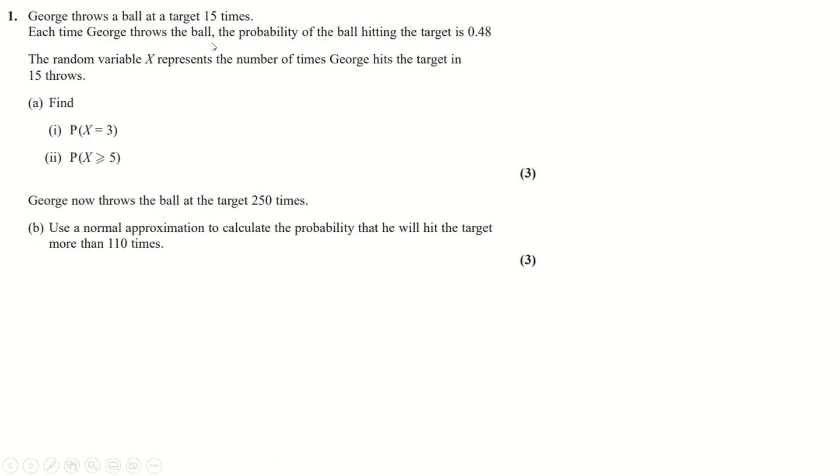It looks like n is 15, p is 0.48, so that's fine. Go in this calculator. You can use binomial pd with variable x equals 3 and just get this number out. If you use those two things, it's the n and the p.